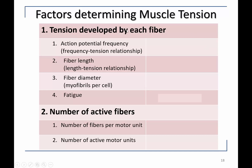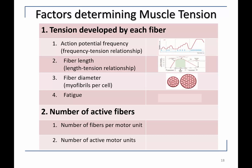There are some factors that can determine muscle tension. They include the action potential frequency — we saw evidence of that during the lab — the fiber length (the length-tension relationship), the fiber diameter (the larger the cell in diameter, the more force it can generate, because each myofibril is a force generating machine), and finally there is fatigue.